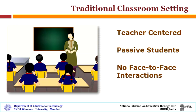Students try to absorb as much information as they can. Cooperative learning strategies break this monotony. One of the essential elements of cooperative learning is face-to-face interaction. Thus, for all cooperative learning strategies, the seating arrangement is changed to allow students to face each other literally. Now let us take a look at how this traditional classroom can be converted to a cooperative learning classroom.